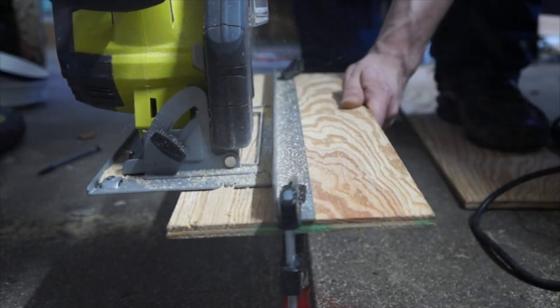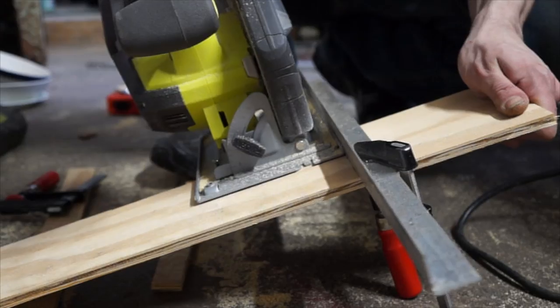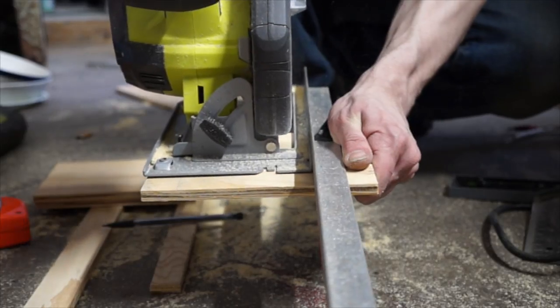I started by cutting all the pieces of wood out based on the length of my LED strips and the number of them that I'd used. I also cut some pieces of wood for a small power supply box.